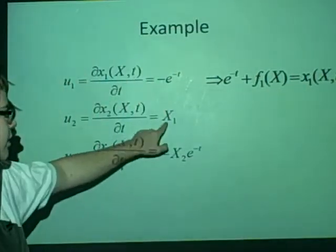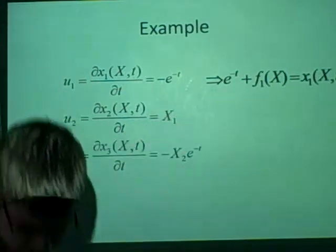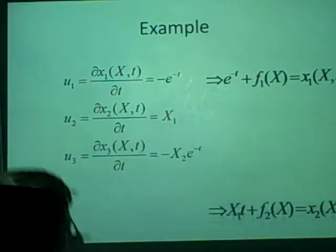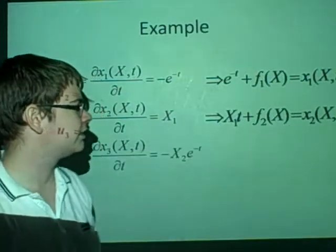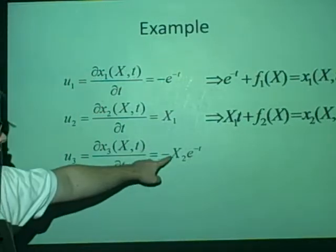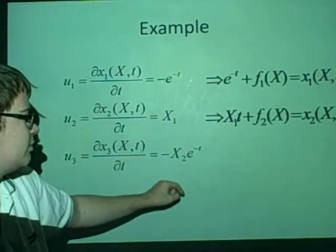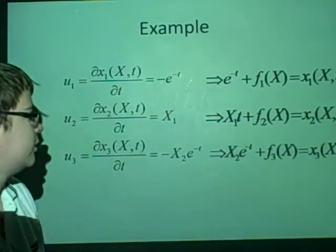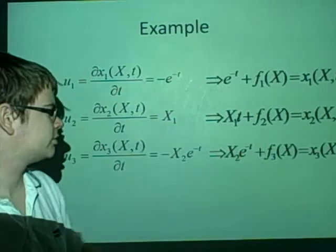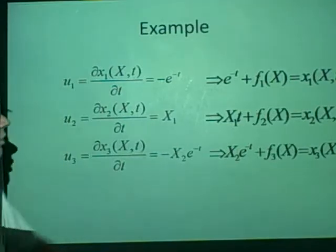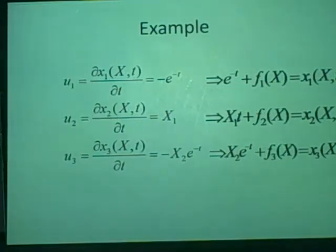The same for here, we'll go X1 times t, and it gives us some function as well, and there's little x2, and here the minus comes down, and we'll have another function as well. So I hope that's all fine, so we've got x1, x2, x3 here. But we've got these functions, so we want to get rid of these functions.